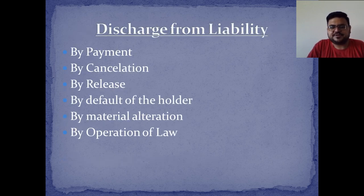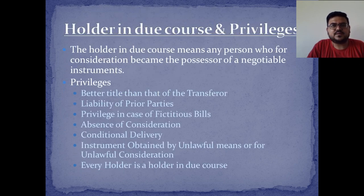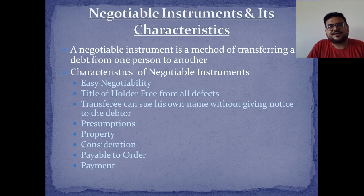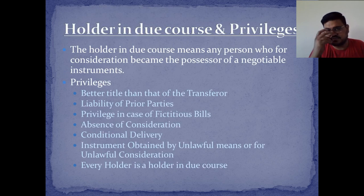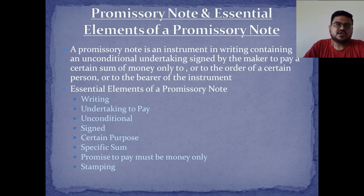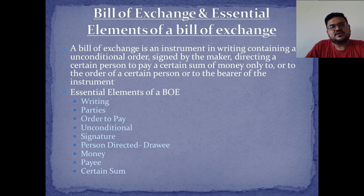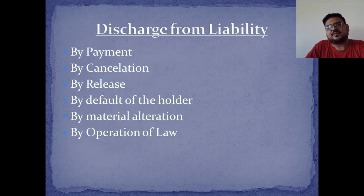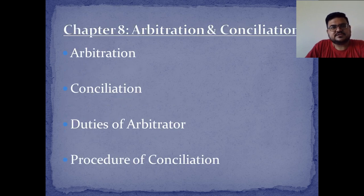This concludes the chapter on negotiable instruments. To summarize, we covered: negotiable instruments and their characteristics; the meaning of holder in due course and privileges; promissory note and its essential elements; bill of exchange and its essential elements; cheque and its essentials; and discharge from liability.